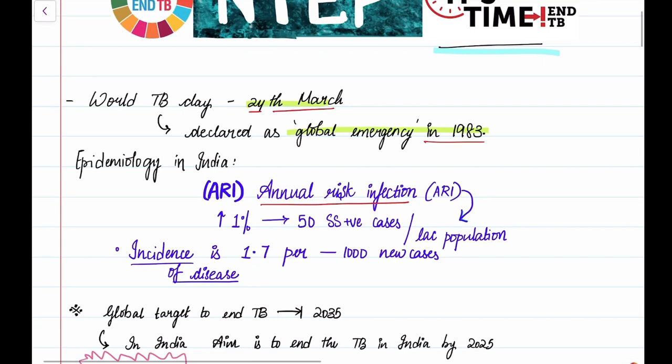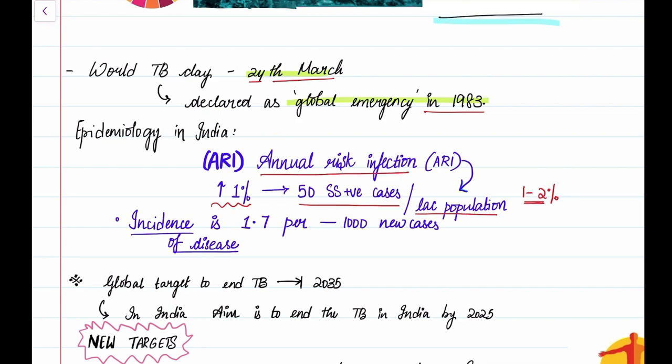What is ARI? It's the proportion of individuals getting infected with TB every year. With every 1% increase in ARI, there are 50 sputum positive cases per 1 lakh population, and ARI is 1-2%. That's like for every 100 individuals, the risk of getting infected with TB is 1-2. That's a lot.